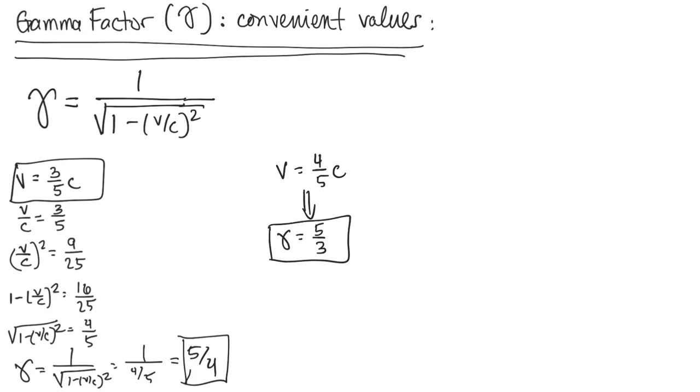So these numbers are just convenient to use, and because of their convenience in terms of making calculations nice and clean, we'll use them quite a bit in this course. So we'll often talk about the velocity being 3 fifths or 4 fifths the speed of light.